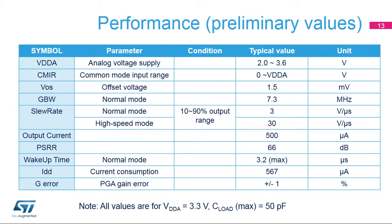The following table shows performance parameters for the STM32H7's op-amp. All values are preliminary. The op-amp can work from 2.0 to 3.6 volts from the VDDA supply with rail-to-rail input and output. The offset voltage can be calibrated down to 1.5 millivolts. It has a gain bandwidth of 7.3 megahertz.